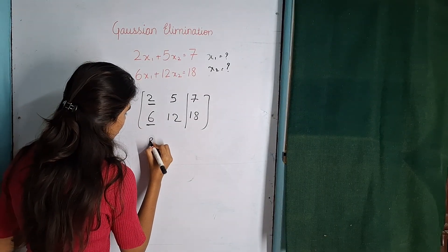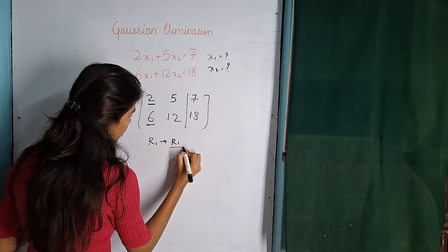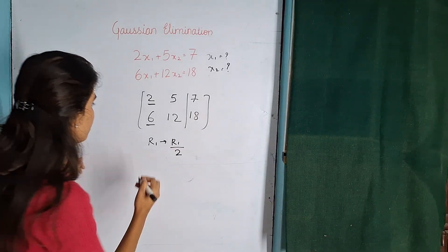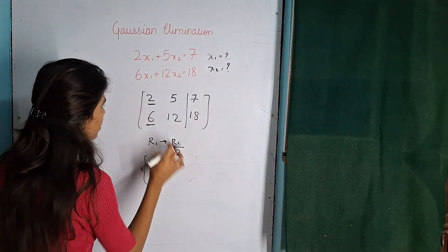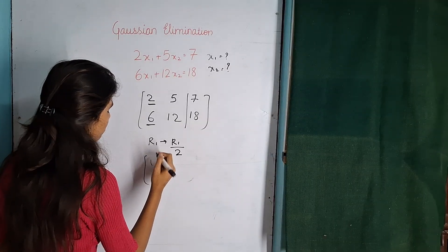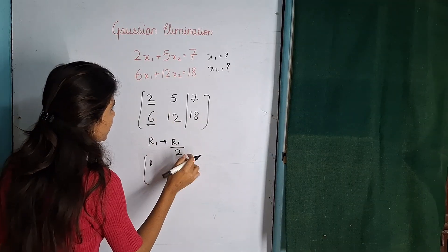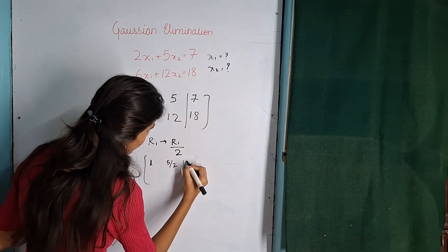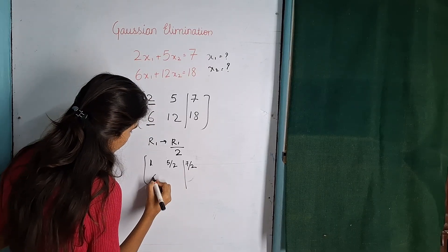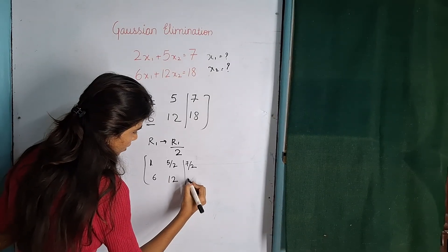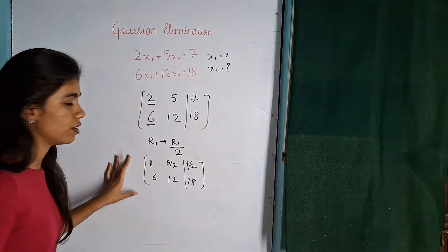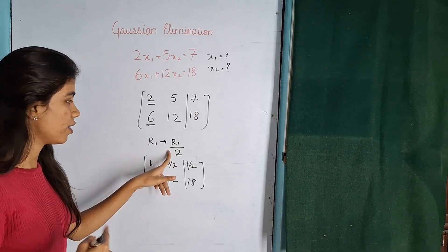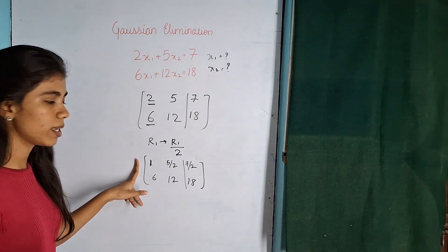We will do R1 equals R1 divided by 2. So we have 2 here, we will divide it by 2, hence we will get 1. So this will be 2 divided by 2 will be 1. 5 divided by 2 we will write it as it is. 7 divided by 2 also we will write as it is. 6, 12, 18. So second row we have no changes, only the first row we have divided by 2. Why we have divided? To make this 1.